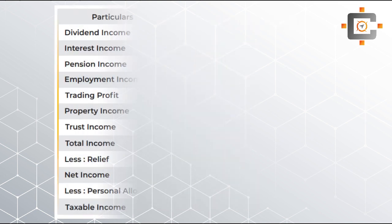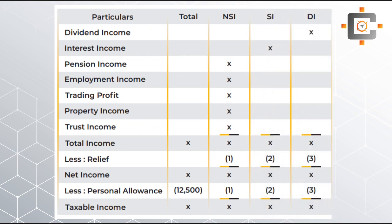Now let's come to the important thing, which is the pro forma to calculate the income tax. First of all, we have to describe all the taxable income that we are having. When we write the amount of our taxable income, we have to differentiate it — whether it's non-saving income, savings income, or dividend income. Then, once you have the total income, the first deduction will be the relief deduction. Relief includes two things: trading loss as well as qualifying interest. Once you deduct your relief, you will have your net income.